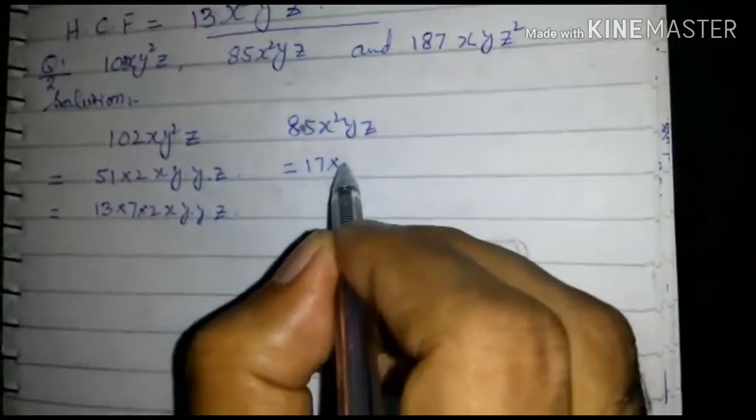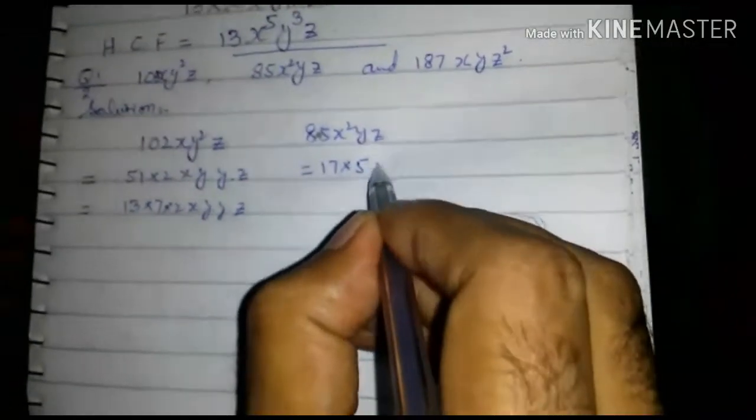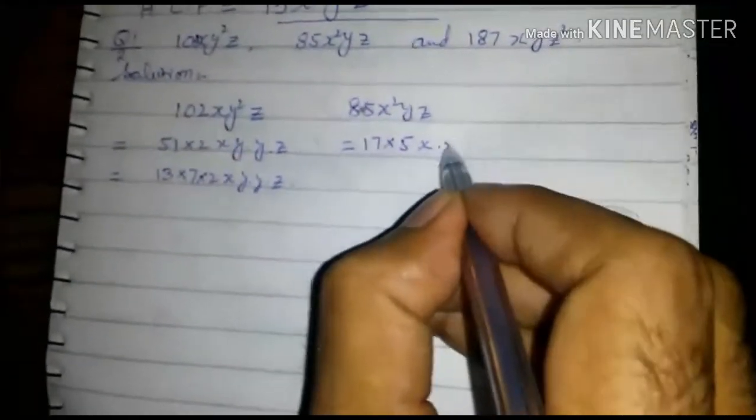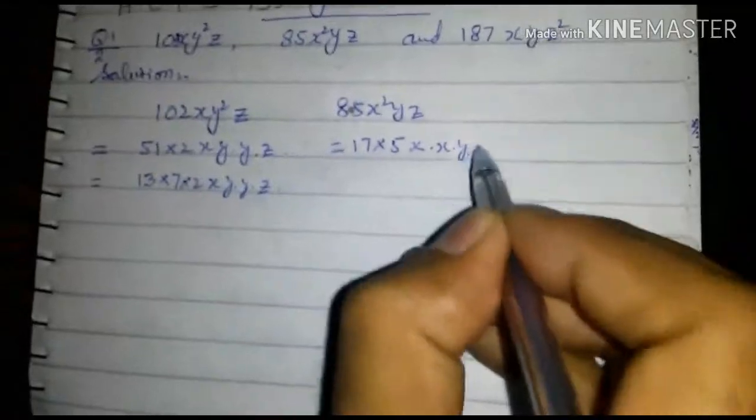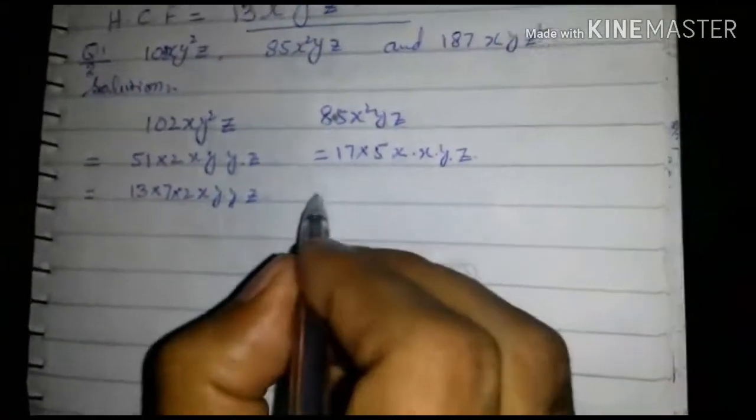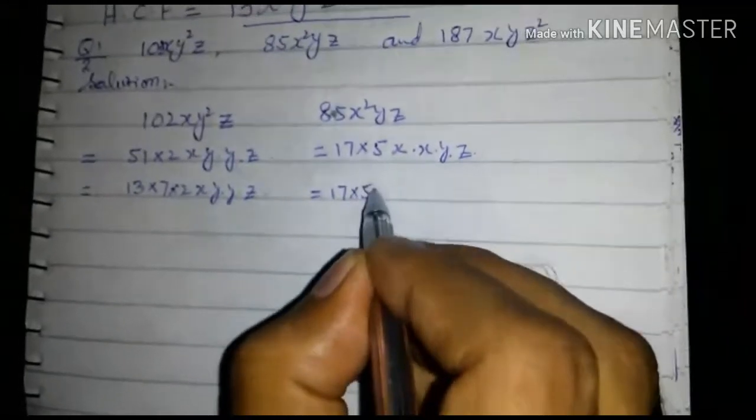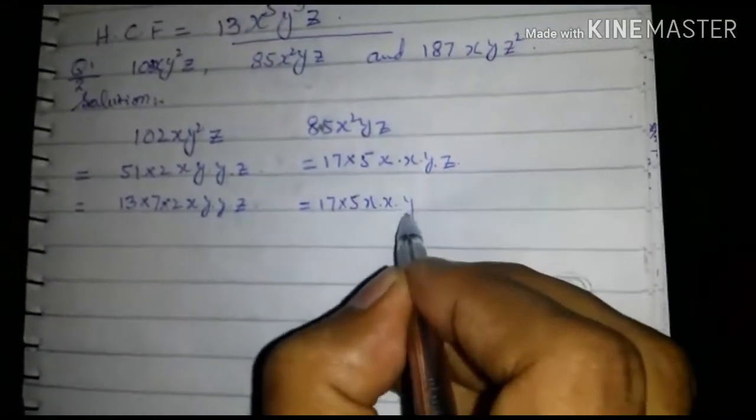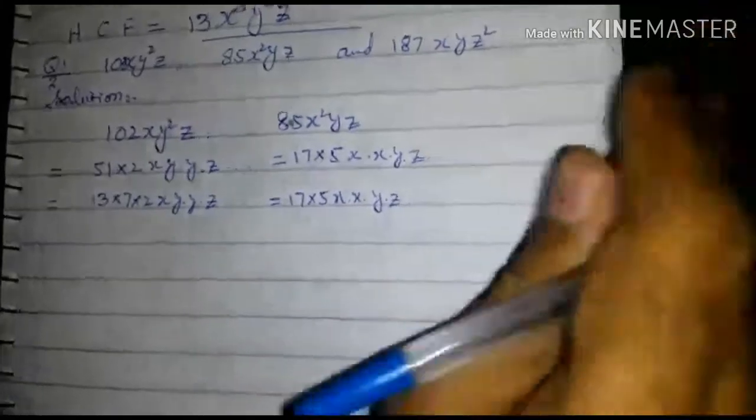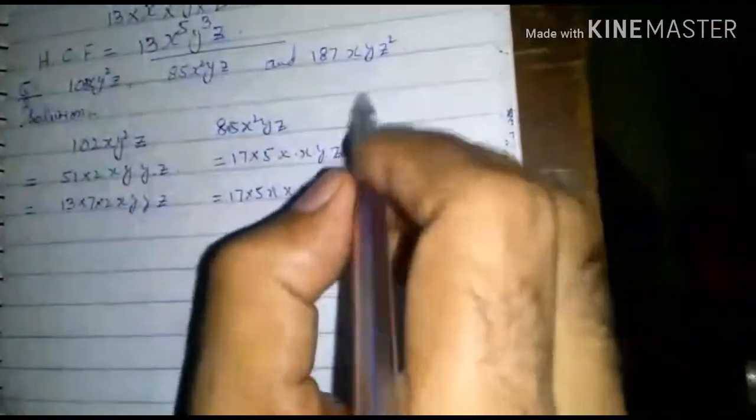17 into 5 x into x into y into z. Now consider third one.